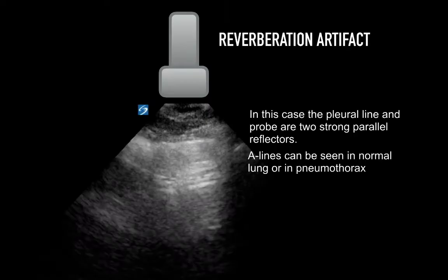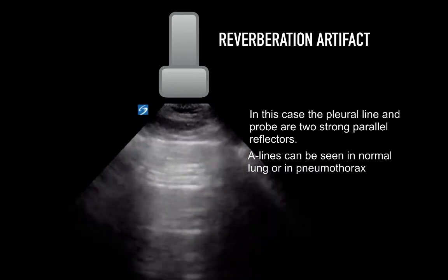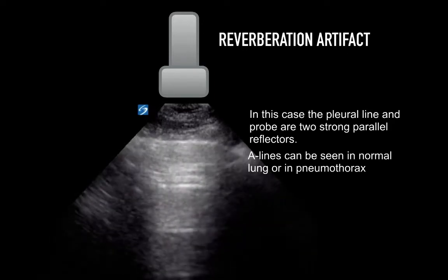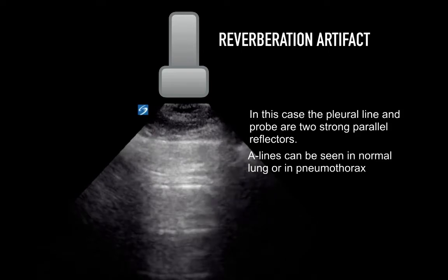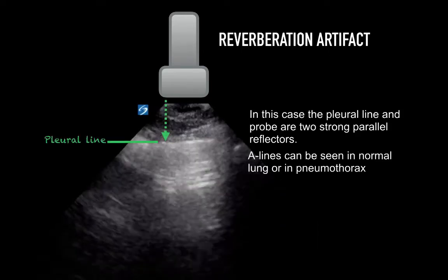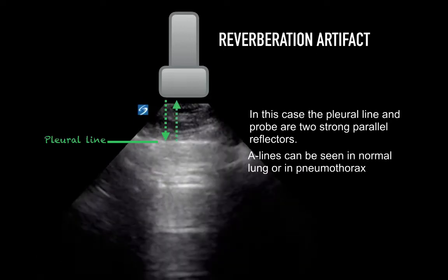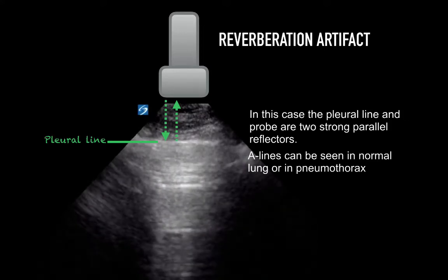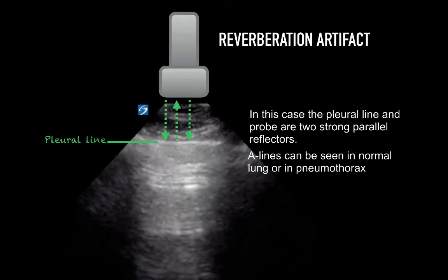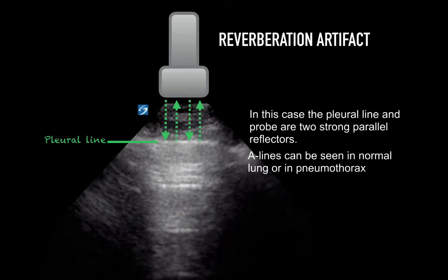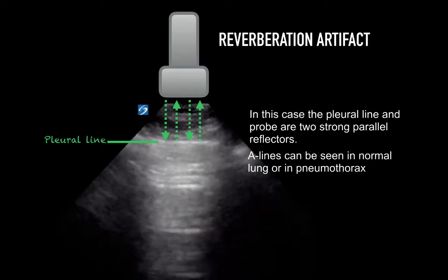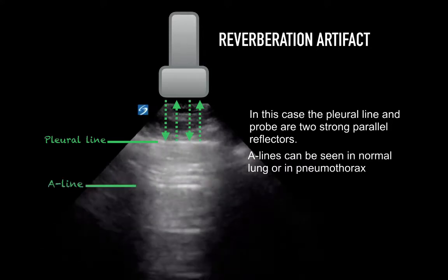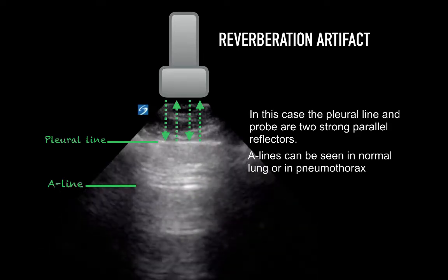Reverberation artifact occurs when an ultrasound beam encounters two strong reflectors. The most intense reflection occurs when air is encountered, as there is a dramatic difference in acoustic impedance. Diagnostic ultrasound imaging is unable to penetrate air-filled alveoli. Off the pleural line, the ultrasound beam travels to the pleural line but gets reflected back to the probe. Rather than the probe reading it, it actually bounces the wave back off the probe surface and back to the pleural line. Finally, it returns to the probe which receives the signal. The machine thinks the wave has traveled twice the time, so we see a duplicate line — what's called an A-line. This occurs at a healthy tissue-air interface.